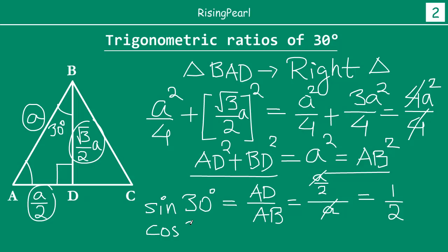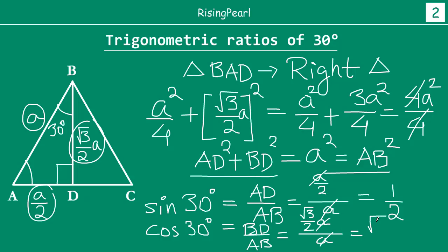Cos 30 degrees is the adjacent side divided by the hypotenuse, which is BD over AB. BD is (√3/2)A and AB is A, so A cancels and cos 30 equals √3 over 2. Tan 30 degrees equals sine 30 over cos 30, which is (1/2) divided by (√3/2), giving 1 over √3.